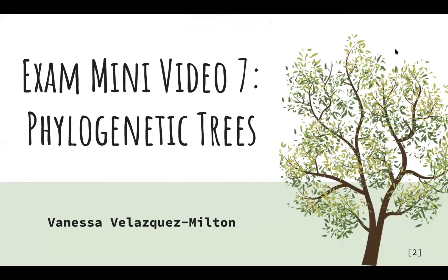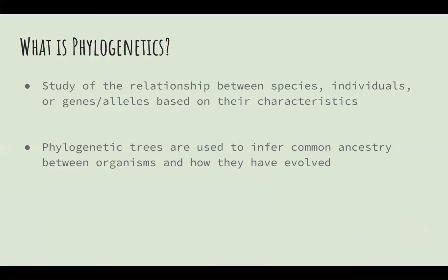In this video, I will be explaining phylogenetic trees by making my own example of one from a collection of different shoes that I have. First, I want to explain what phylogenetics is. Phylogenetics is the study of the relationship between species, individuals, or genes and alleles based on their characteristics. People make phylogenetic trees to infer common ancestry between organisms and how they have evolved.